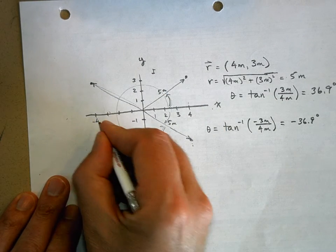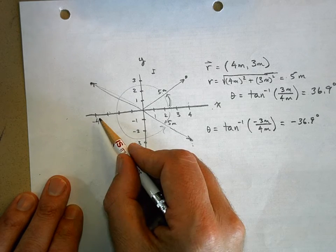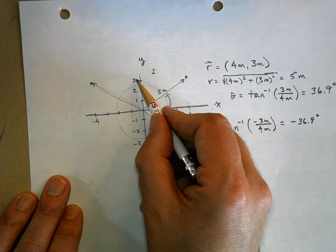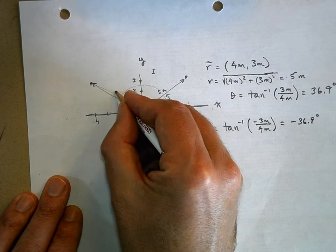And x is negative 4, but it gets squared. So negative 4 squared is 16, plus 3 squared is 9. You get 25 squared of 25 is still 5. So it's still 5 meters.